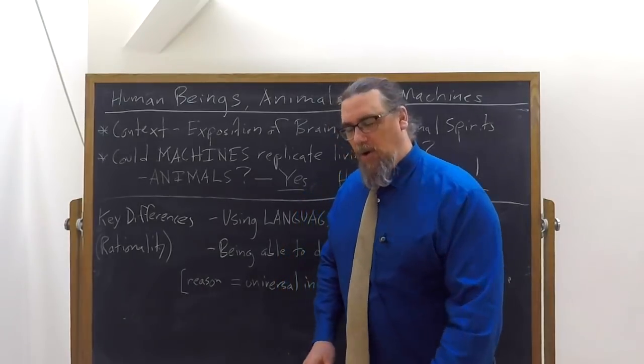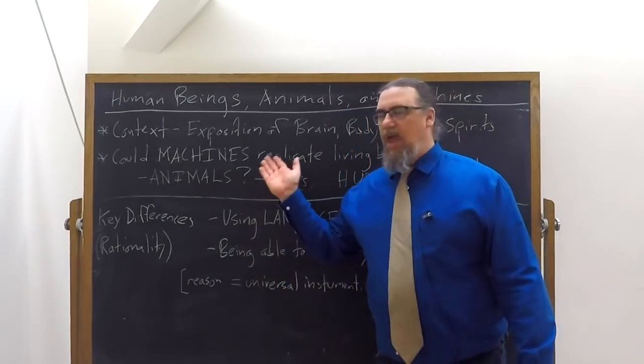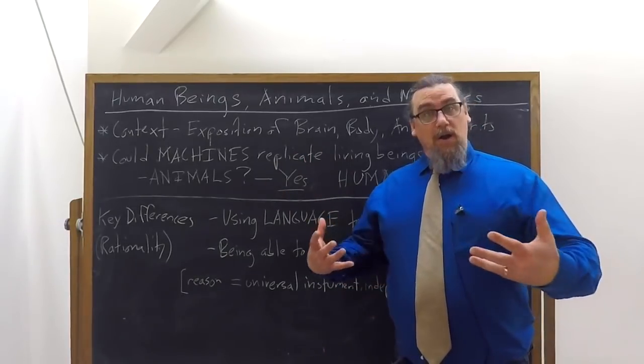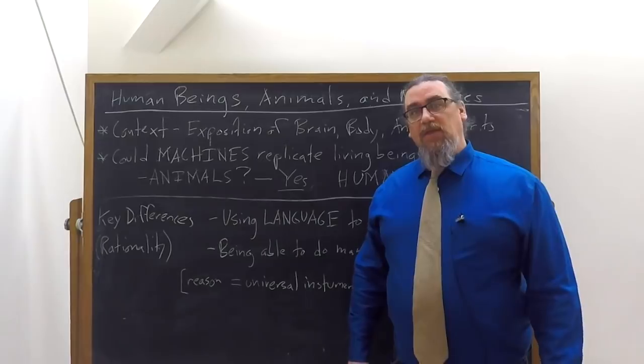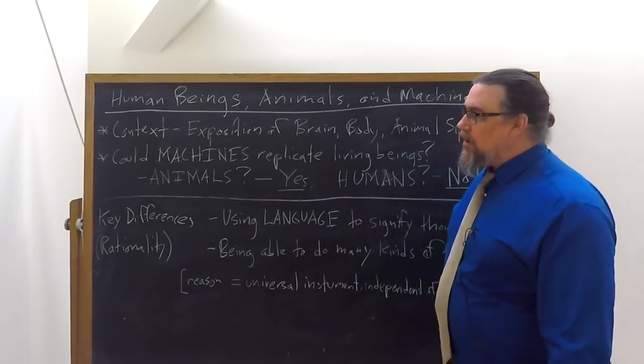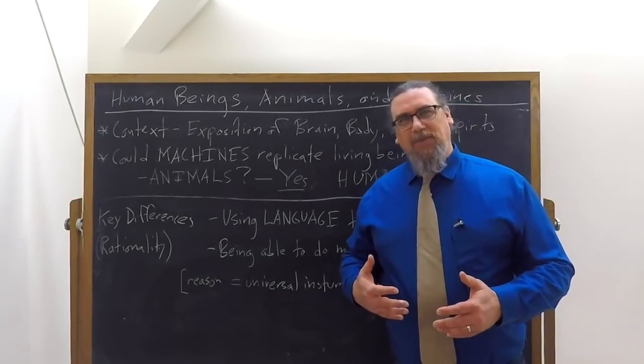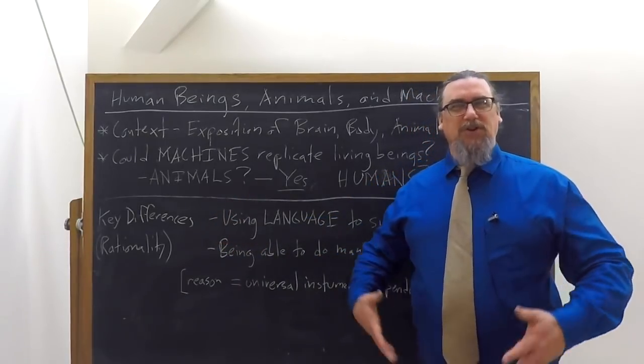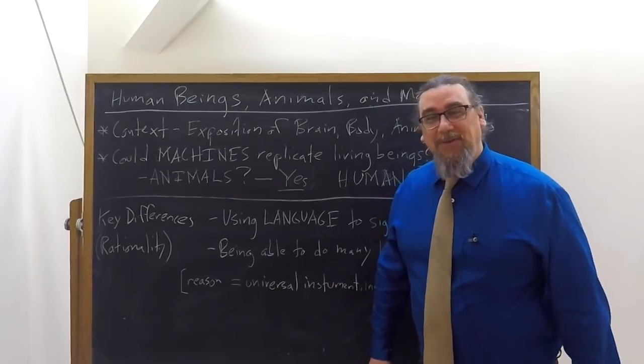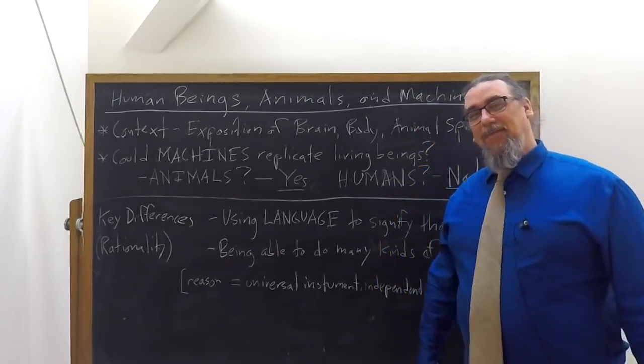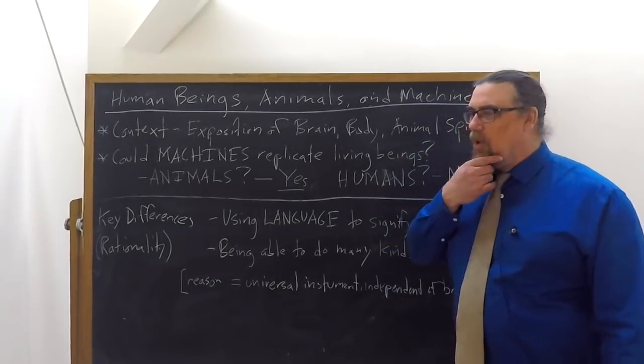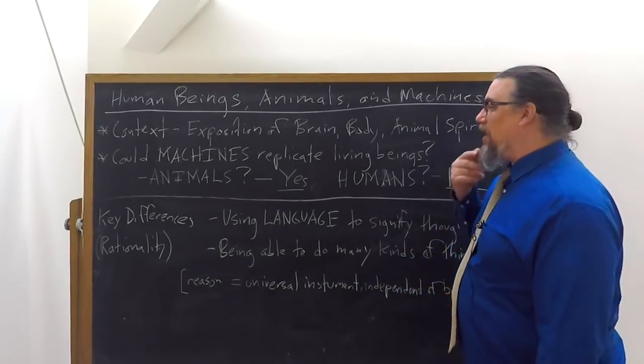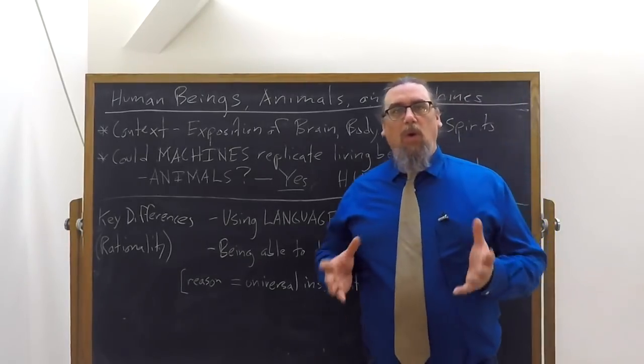Whereas if any machines resembled us in body and imitated our actions insofar as this was practically possible, which nowadays covers an awful lot, we would still have two, he says, very certain means of recognizing that they were not human beings. Now, these are also ways of recognizing that animals, other animals, the brute animals as they would have called them back then, are not the same as human beings either.